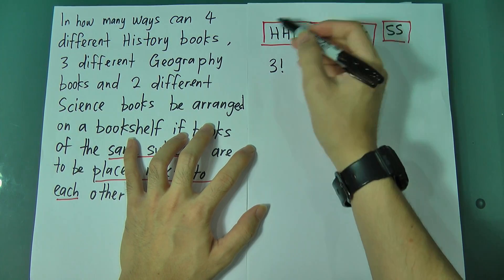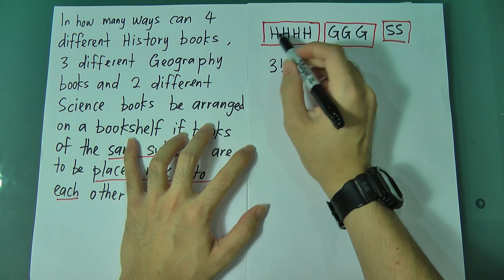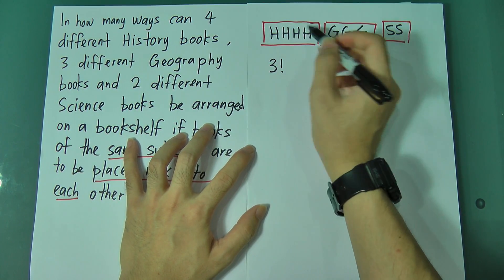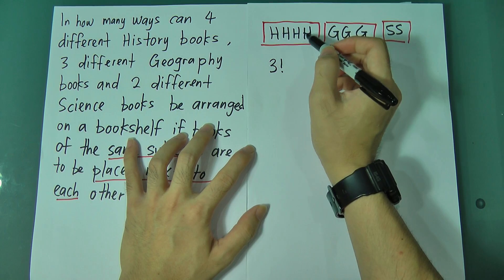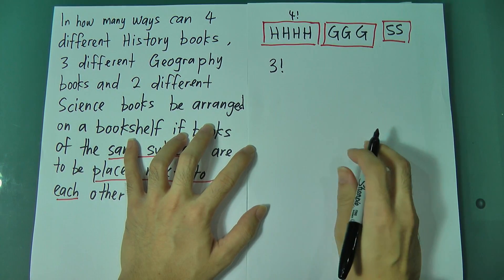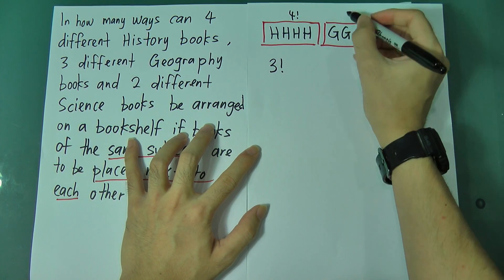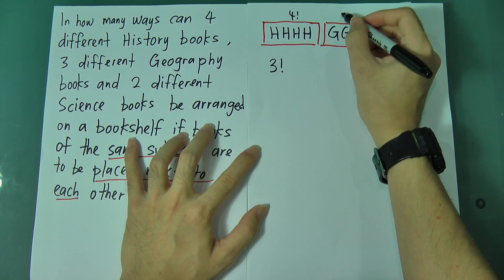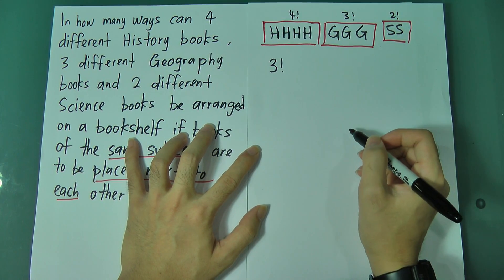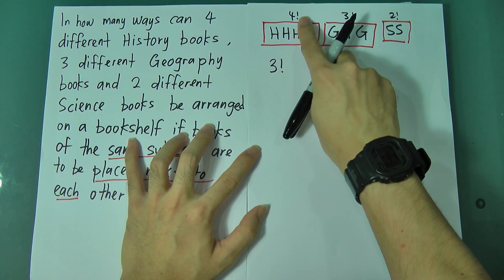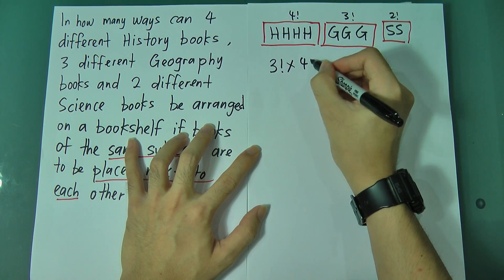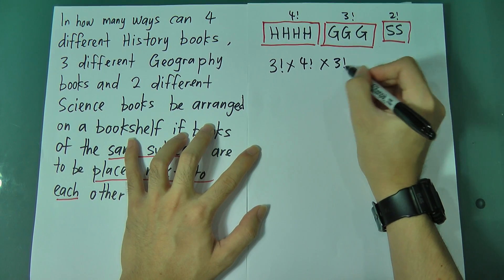Within the history group, we have 4 history books. Those 4 history books can still change place among themselves — we call it 4 factorial. Same for the 3 geography books: they can change place among themselves, so that's 3 factorial. And 2 science books give us 2 factorial. So you multiply: 3 factorial × 4 factorial × 3 factorial × 2 factorial to get the correct answer.